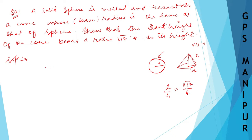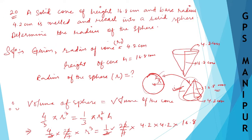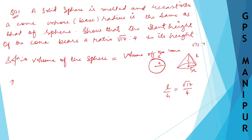Since a solid sphere is melted and recast into a cone, the volume of the sphere is equal to the volume of the cone. The formula for the volume of the sphere is 4/3 π r³, and this is equal to the volume of the cone, which is 1/3 π r² h.